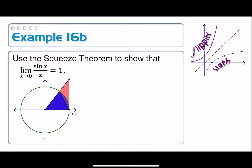We have the unit circle graphed here, and I've made some sort of angle which we're calling theta. When I trace out that angle, I'll have some positive angle, and I'm going to make sure I only use an angle measurement from 0 to π/2 to ensure that the geometric relationships we're about to discuss always hold true.